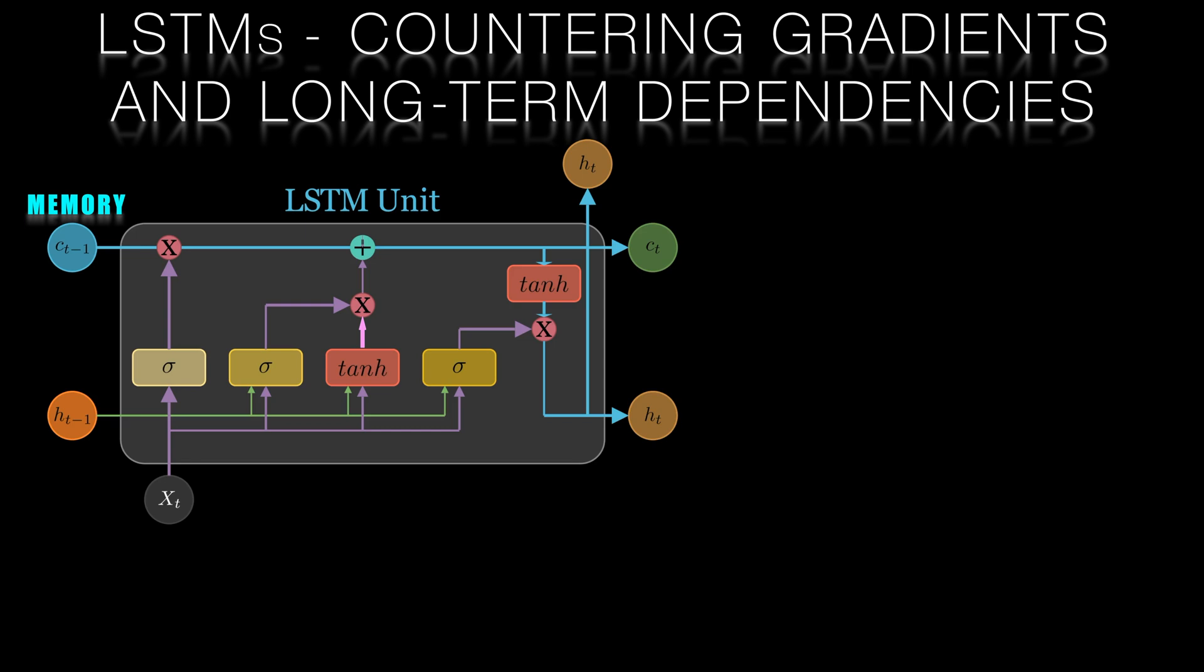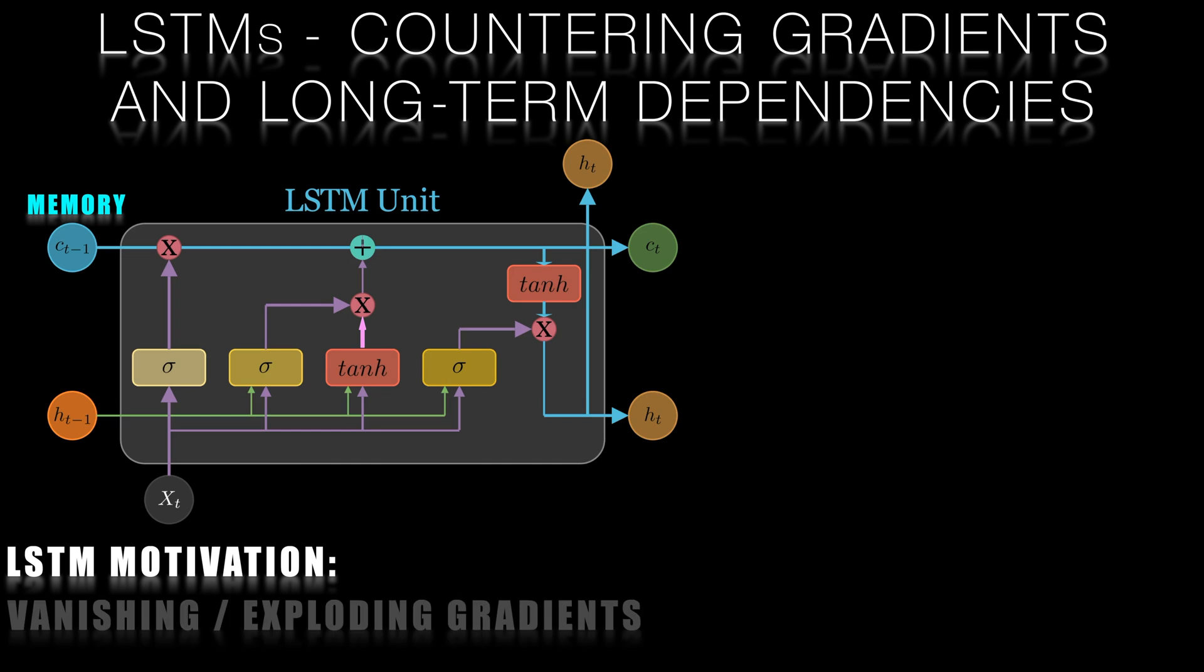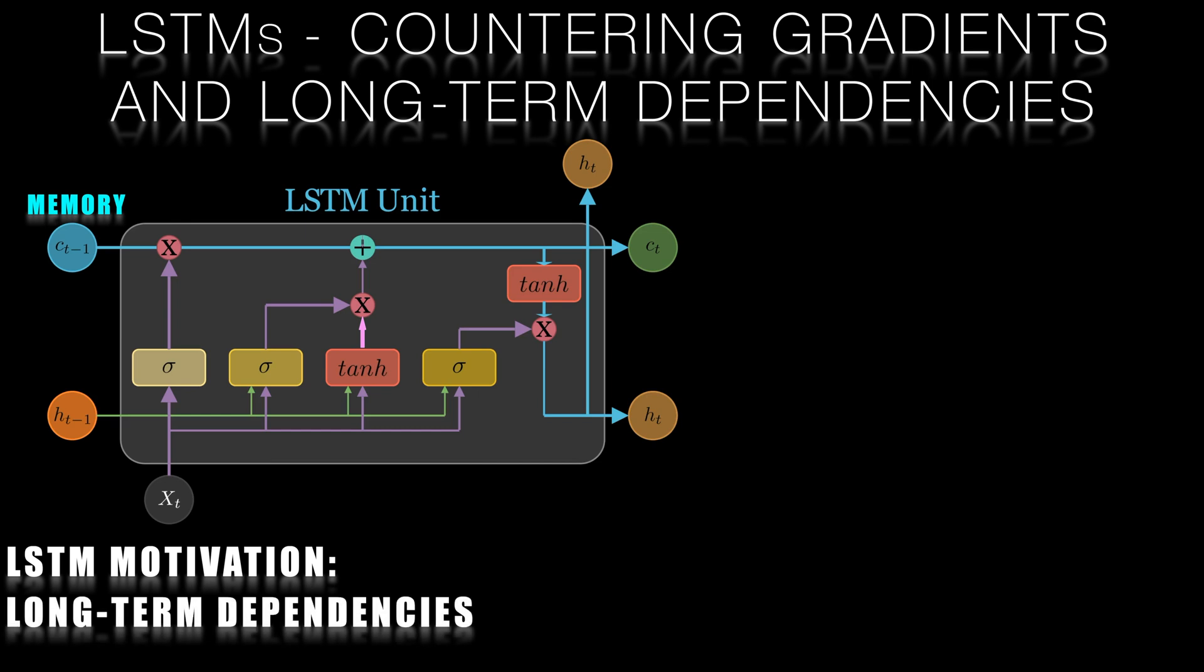At the core of the LSTM network is the memory cell, which is a kind of container that can store information over a long period of time. Let's pick it apart step by step to gain an intuition of how it works. Keep in mind the motivation here is to stop the vanishing and exploding gradients problem as well as to ensure that the cell has a sufficient long-term memory.